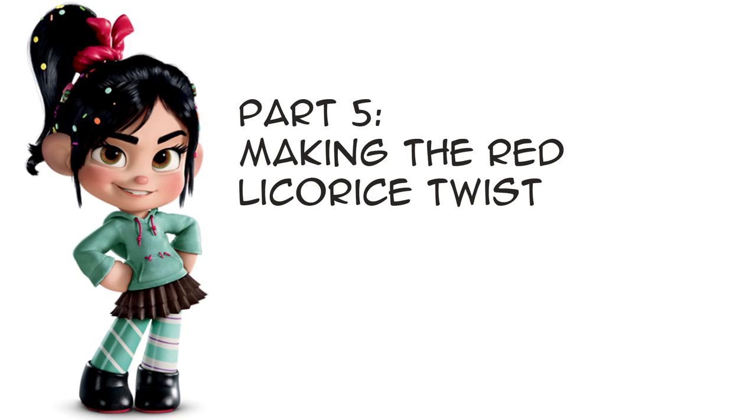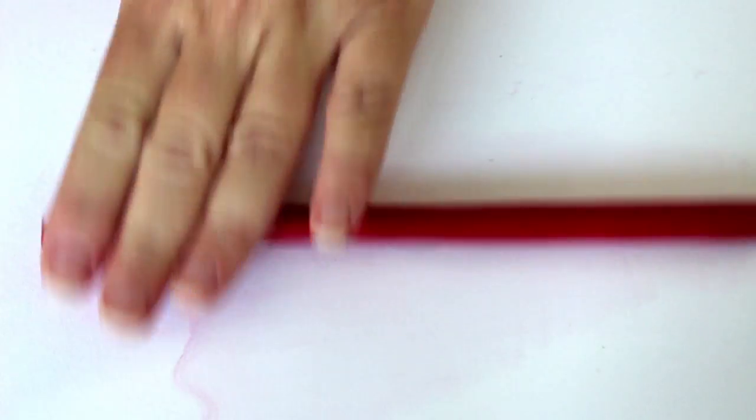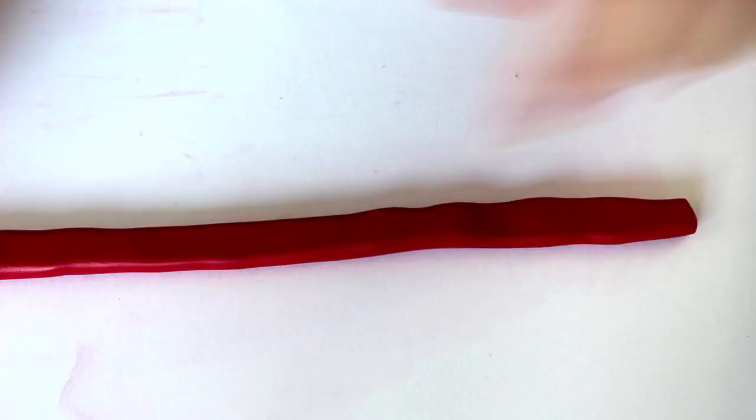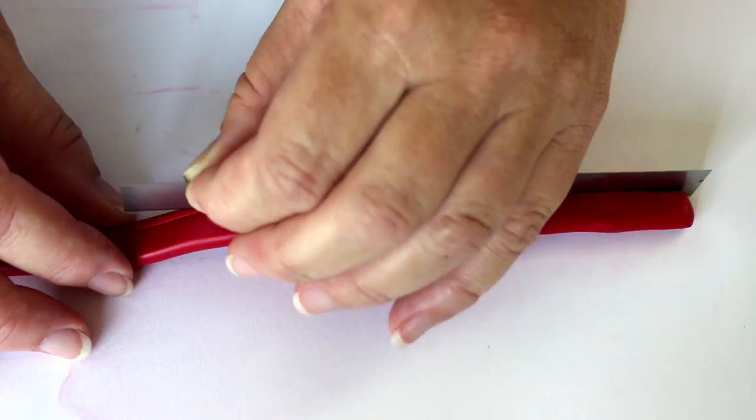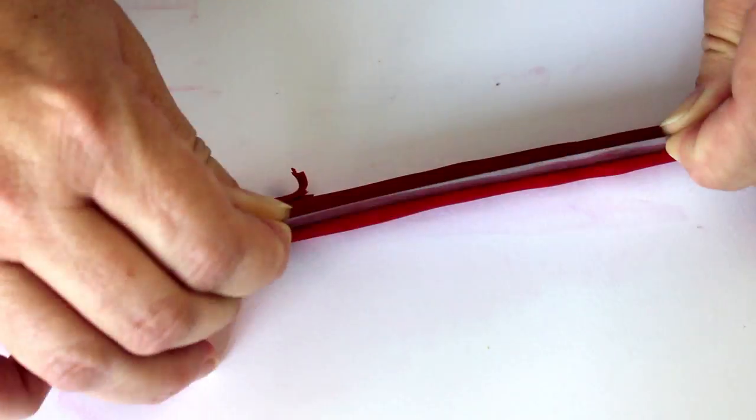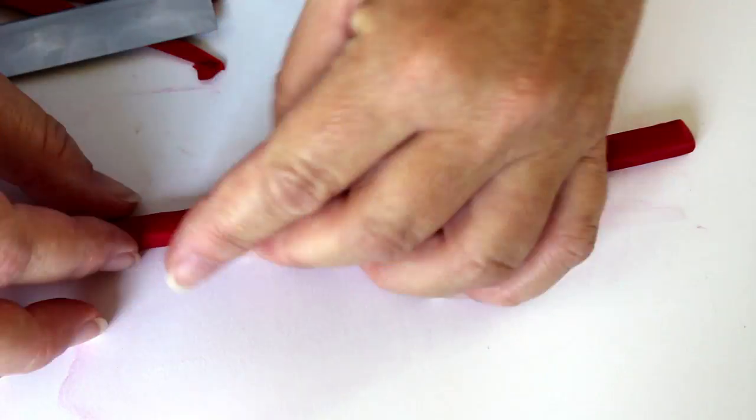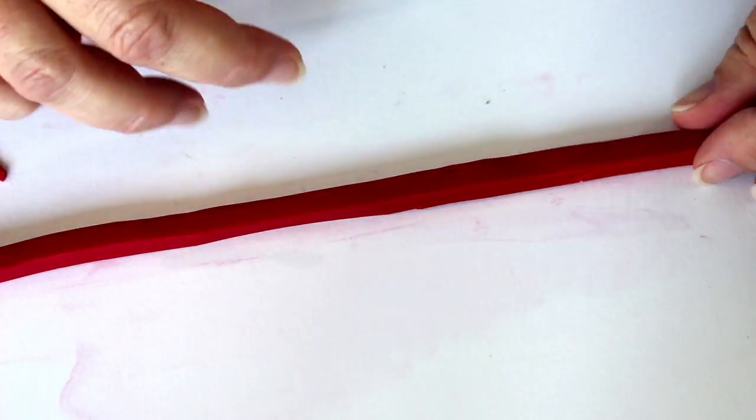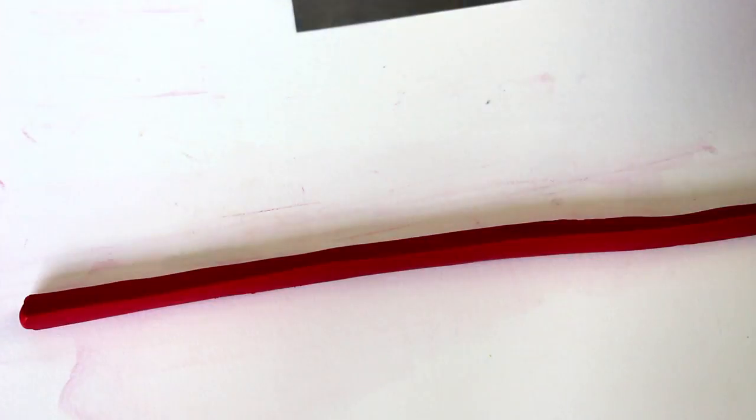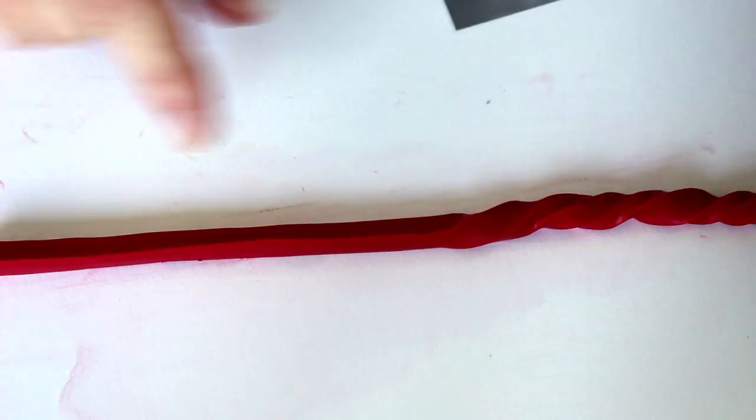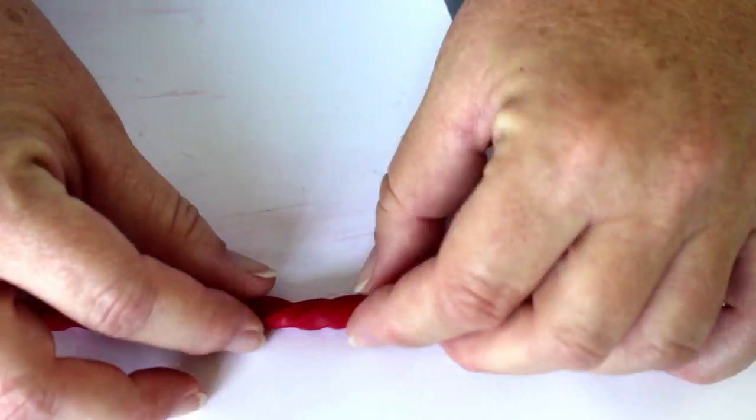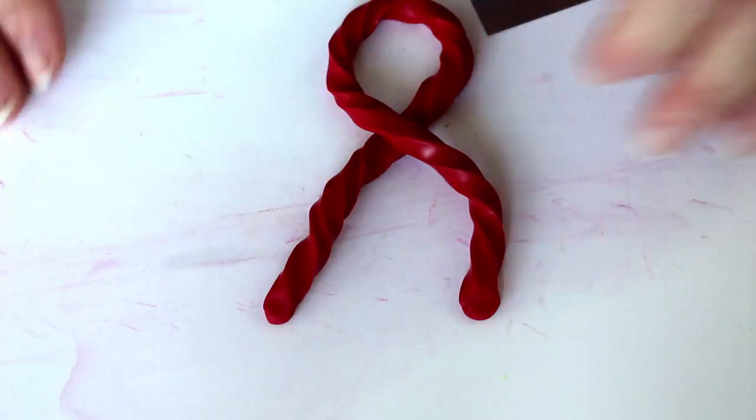Part 5: Making the Red Licorice Twist. Roll out a large snake of red clay. Gently flatten the top with a roller, then trim the sides flat with a blade. Twist the snake into a licorice whip design. Create the ponytail holder shape and then bake according to package instructions.